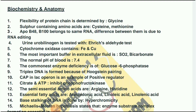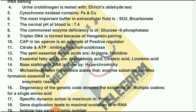Flexibility of protein chain is determined by glycine. Sulfur-containing amino acids are cysteine and methionine. ApoB48 and ApoB100 belong to the same RNA; the difference between them is due to RNA editing. Urobilinogen is tested with Ehrlich's aldehyde test.